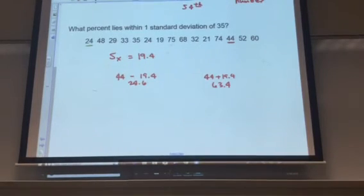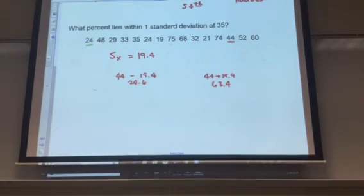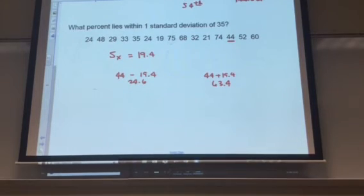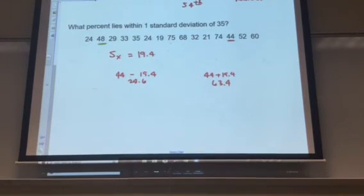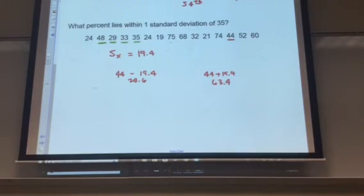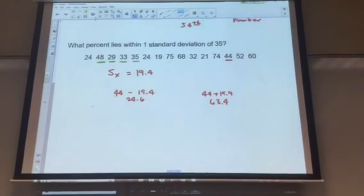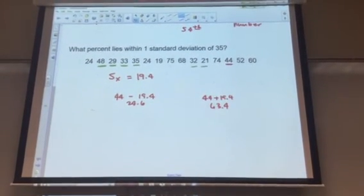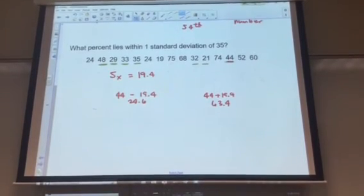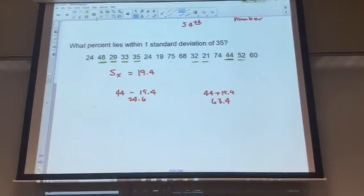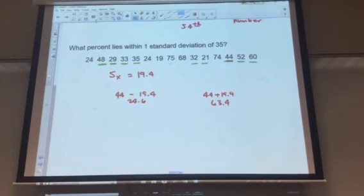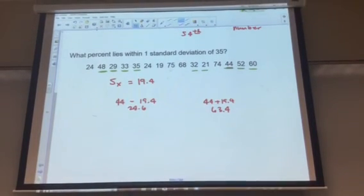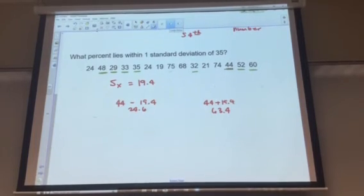Not this one, 24 is outside value. But yes this value, yes, yes, yes, no. Not 19, not 75, not 68. Yes 32, yes to 21, no to 74, yes to 44, yes to 52, and yes to 60. Yes to 21, it's not inside the range.